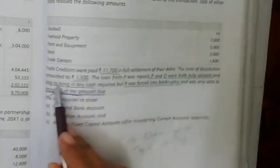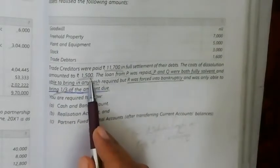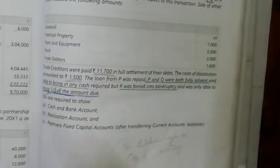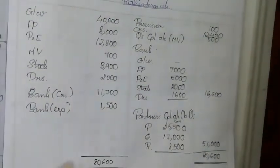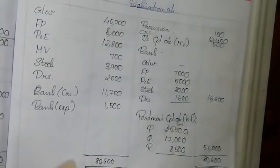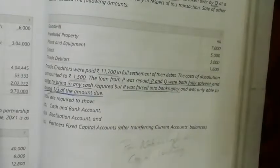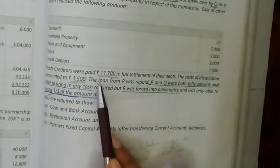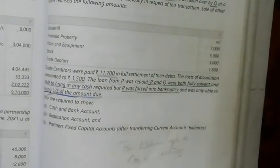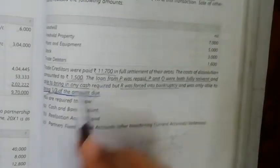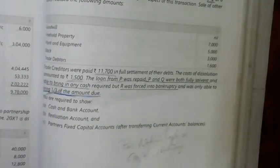The cost of dissolution amounted to 1,500. Journal entry: realization account debit to bank, 1,500 — this is the realization expense. The next item is the loan from P was repaid. Journal entry: loan from P account debit to cash account.